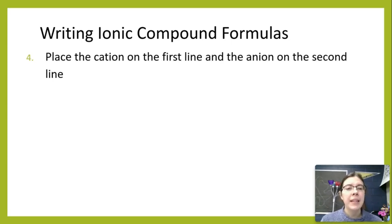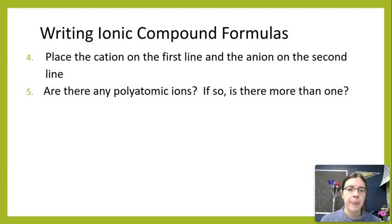Okay, so the next thing is we want to place the cation on the first line, and then the anion on the second line. And then we ask ourselves some questions. First of all, are there any polyatomic ions? And if so, do we have more than one of them?